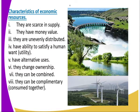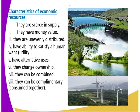Number two, they have money value. If you happen to use that water in agriculture, you'll get money. You can sell that water. You can also tap electricity from it. Number three, they are unevenly distributed — you cannot get them all over. They are distributed in specific places. Number four, they have the ability to satisfy a human want, so they have utility: form utility, possession utility.